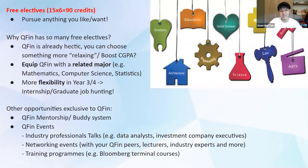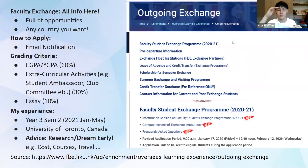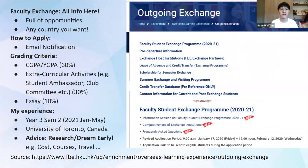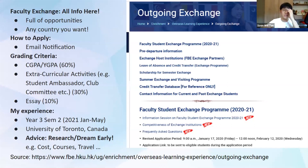Like all courses, we have exchange, and the picture shows basically everything you need to know. You can type 'FBE HKU Exchange' and it will come up. You can see there's literally any country you want — you can go anywhere. You apply via the FBE portal, and the grading criteria is CGPA-based. If you get above a 3.0, you can basically go to the university you want without worrying about quota problems.